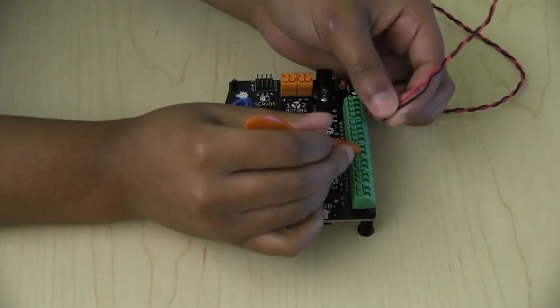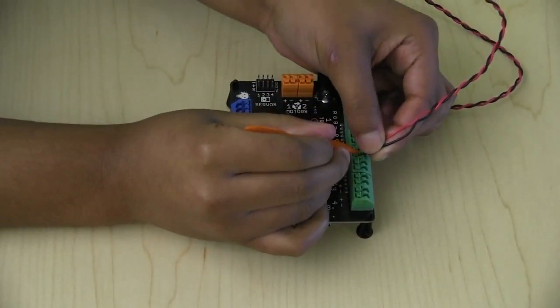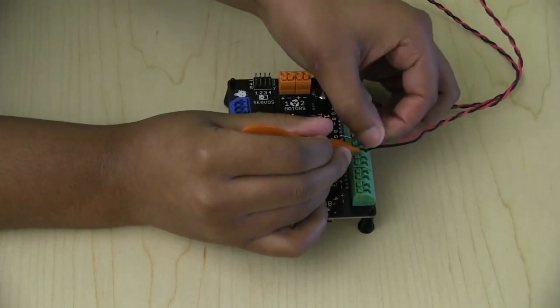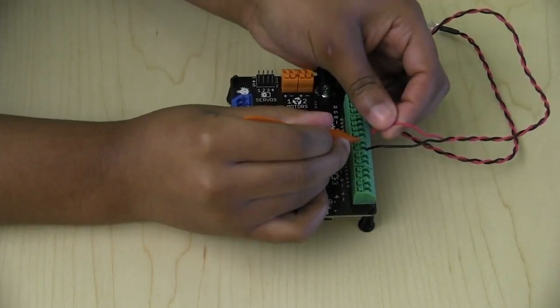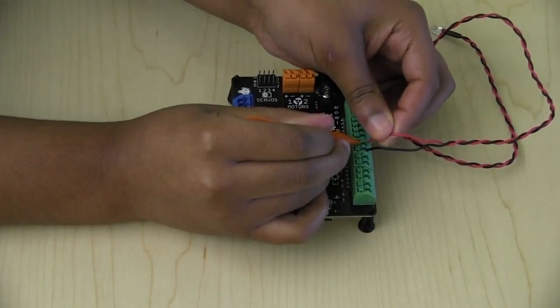To insert the wires, press down on the square terminal tab with the orange terminal tool from the kit. While the tab is pressed in, insert the metal end of the wire at an angle from the table.